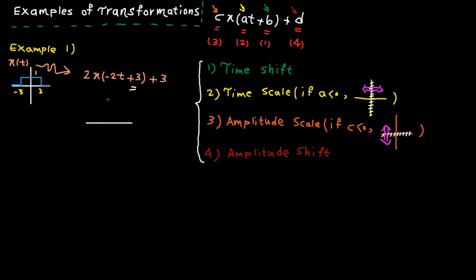Three on the time axis goes to zero, minus three goes to minus six. Here is the shifted signal. Step number two: time scaling. 2t means we play the signal at double speed, so it takes less time to finish, and therefore we need to compress the signal.